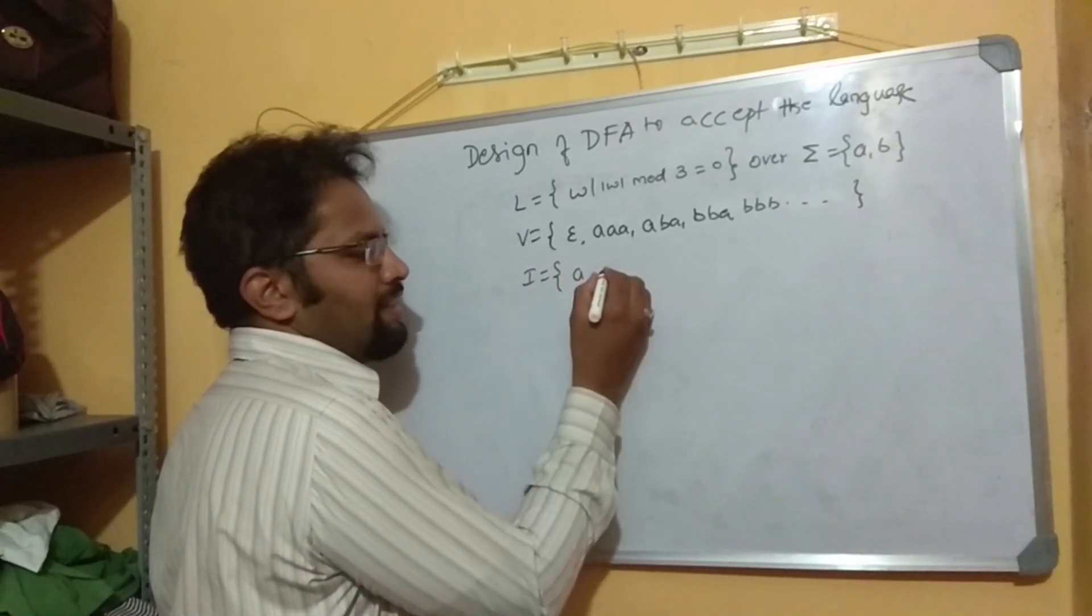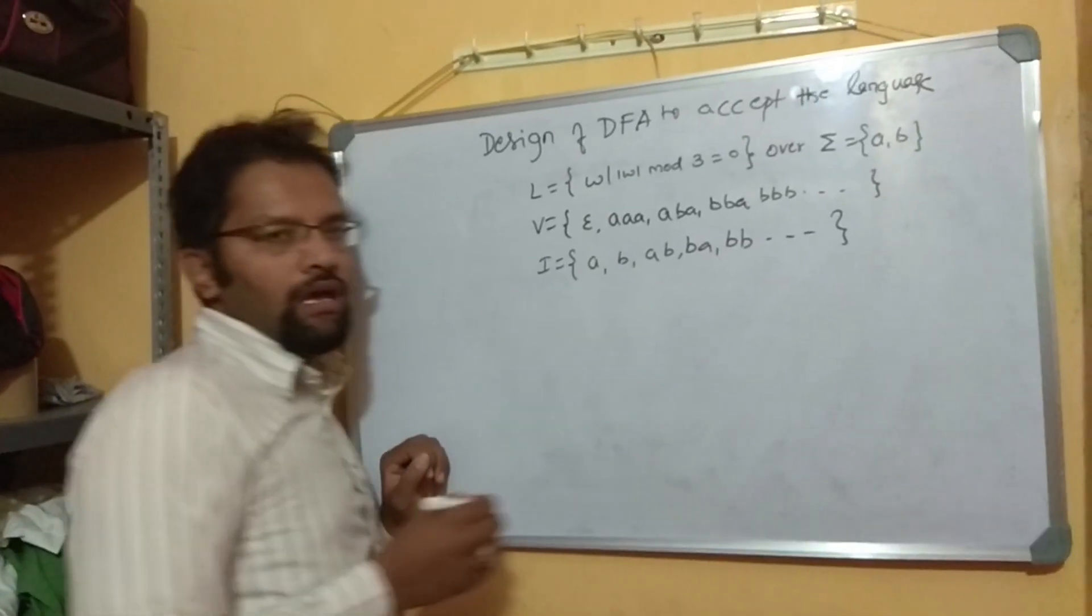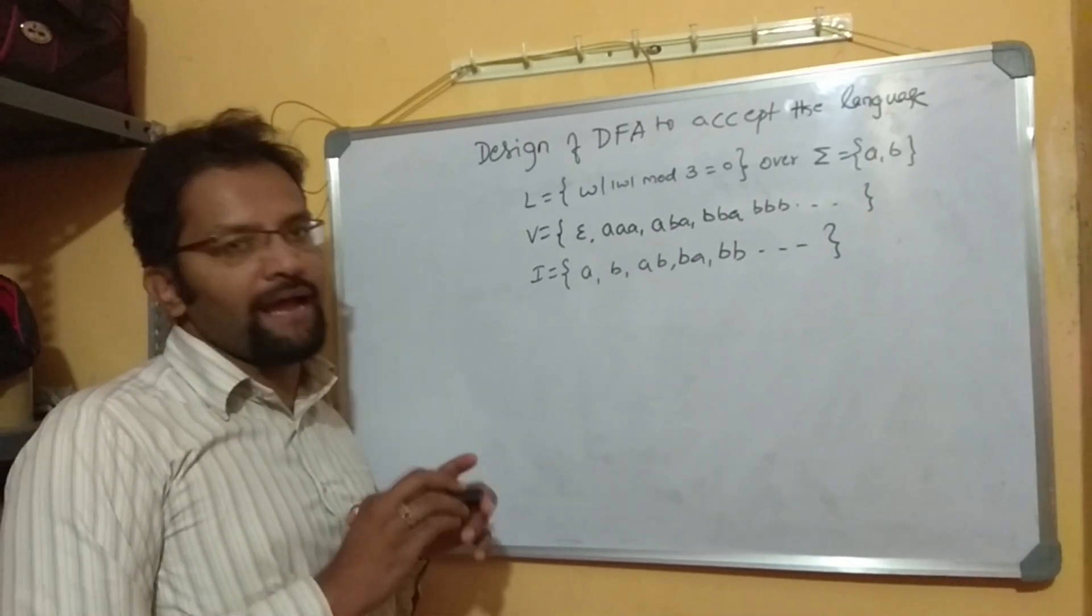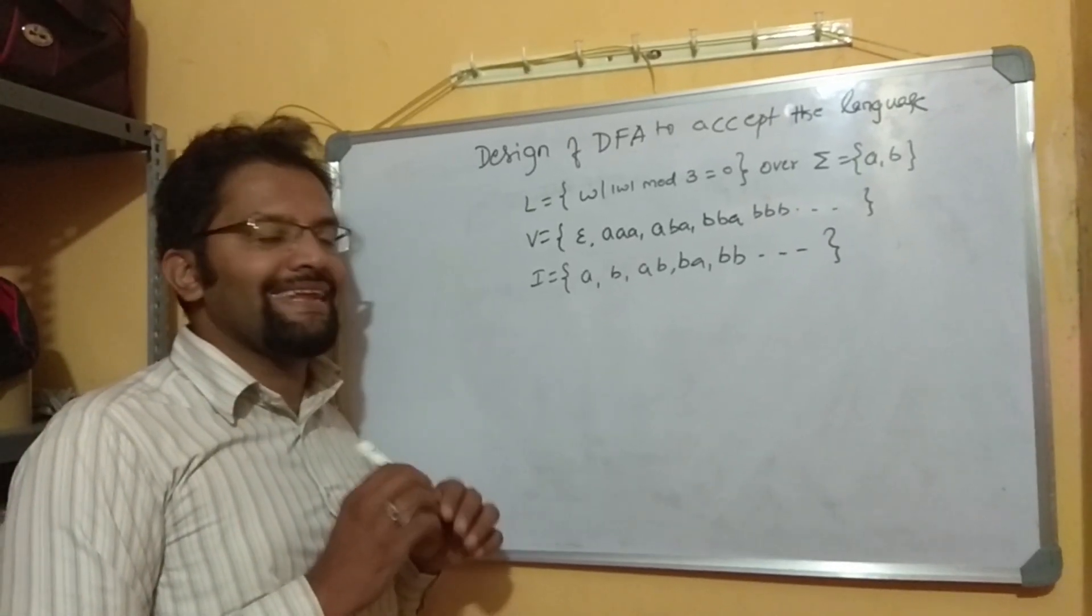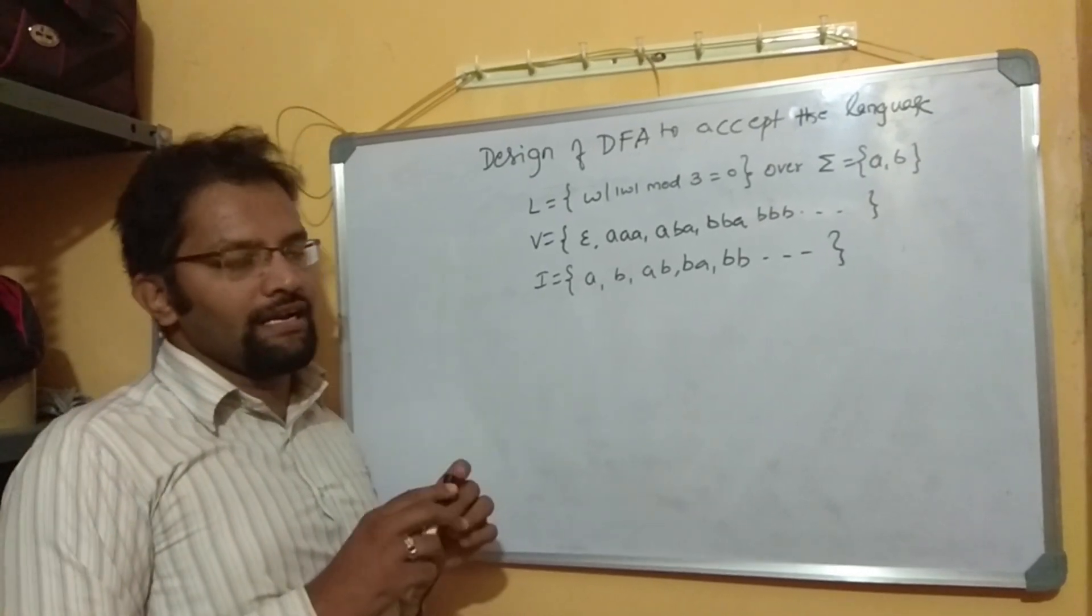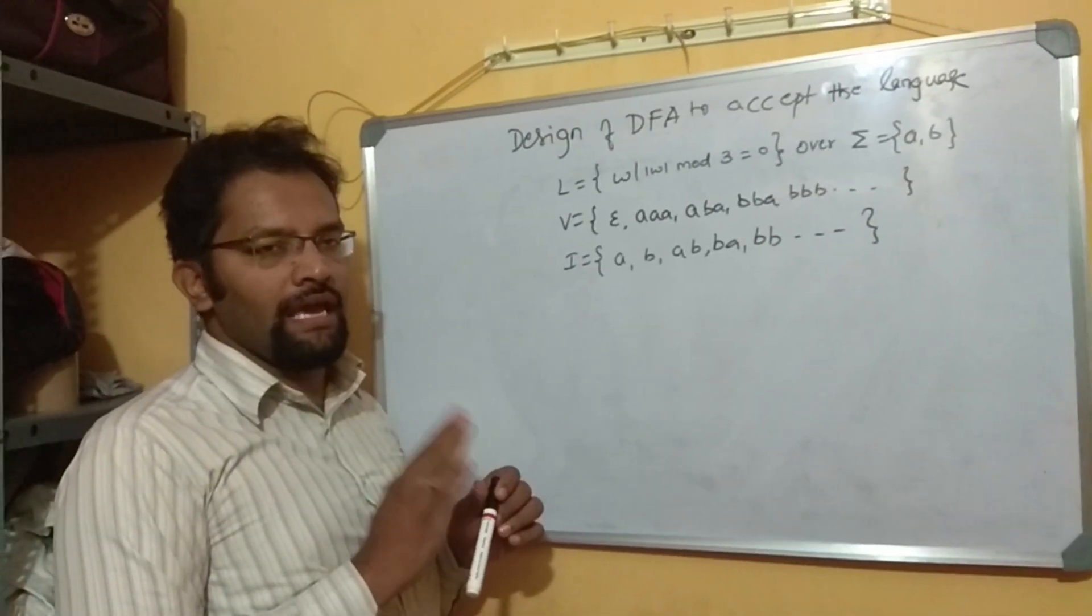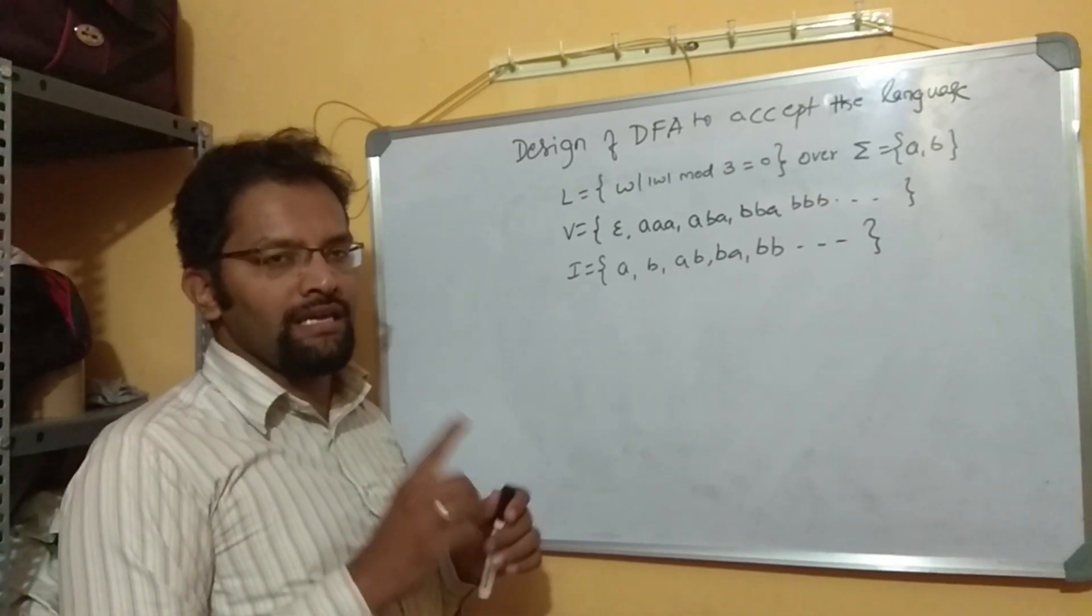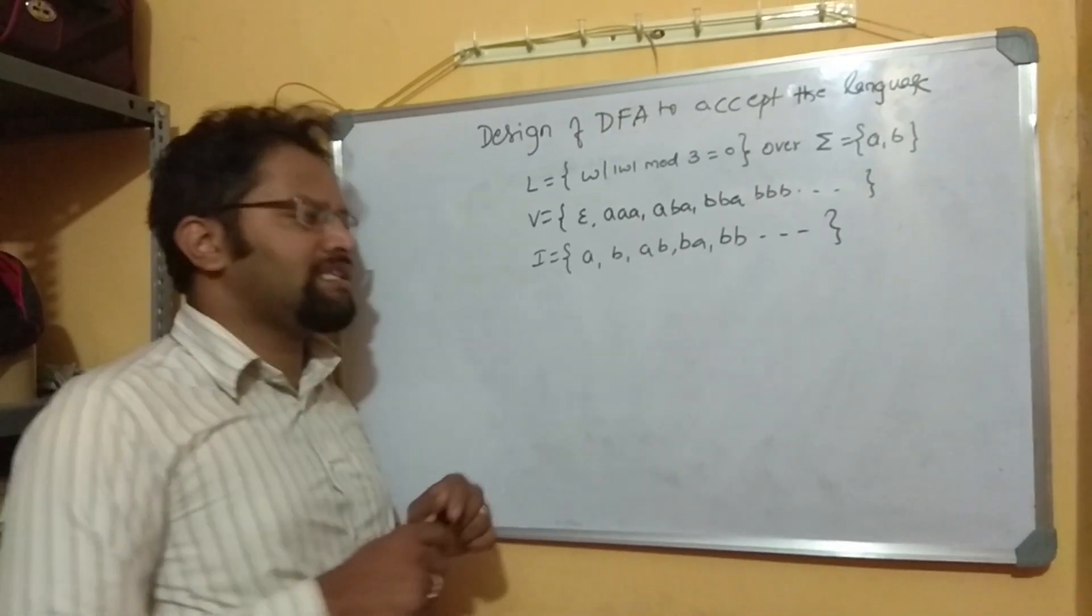Now, the length of the string is mandated but not the pattern. Earlier, we were worried about pattern but not the length. Since length is mandatory or length is a condition for us, number of symbols is only required. It could be AAA, BBB, whatever but not the pattern. So, any strings with length 3, 6, 9, 12 and so on would be accepted. And DFA is very simple to design.